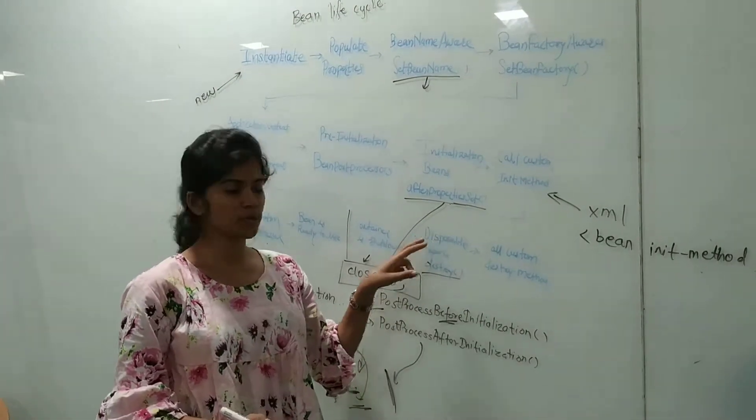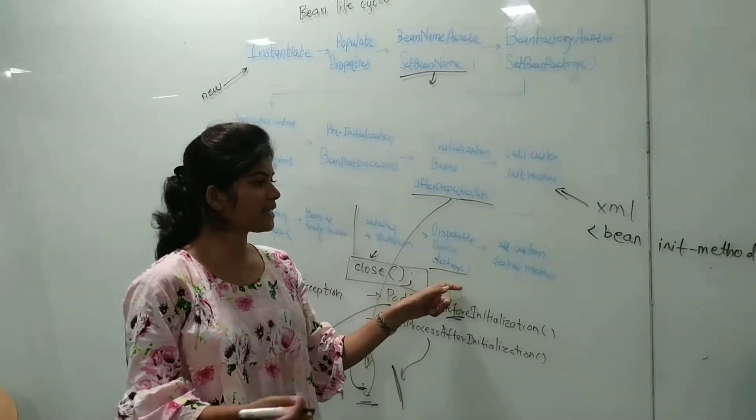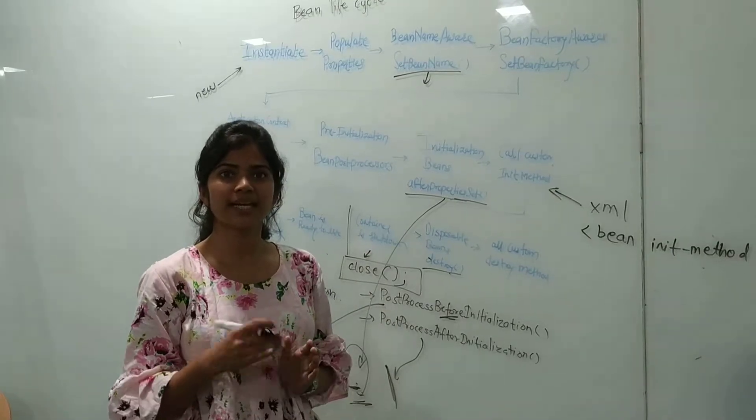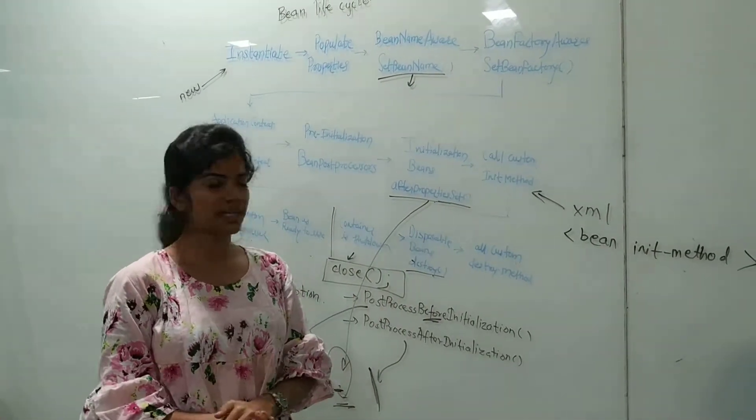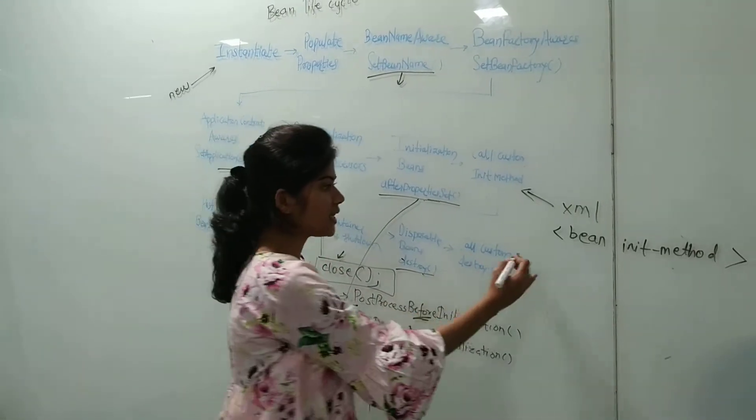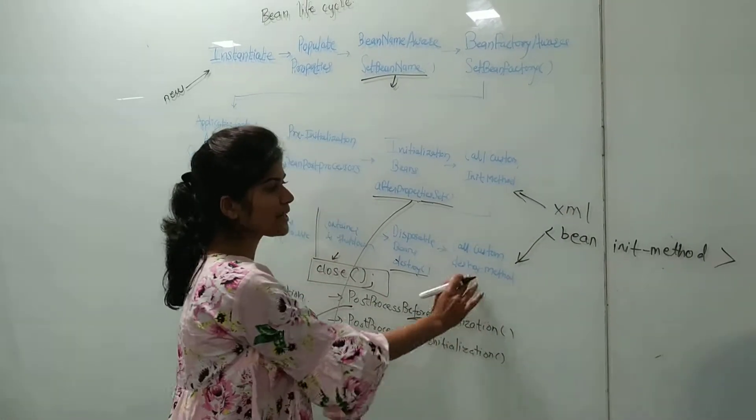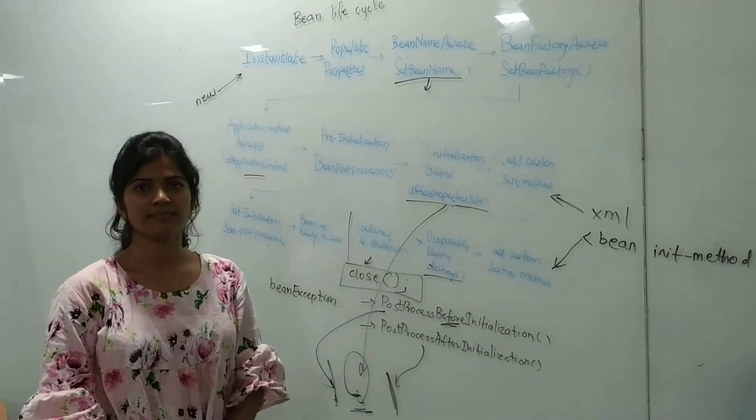In the disposal stage, DisposableBean is implemented, then we override the destroy method, which means the complete bean will get destroyed. After destroying the bean, the custom destroy method is called. This is also an XML method, and we can make use of the destroy method in the bean configuration. This is the bean life cycle. Thank you.